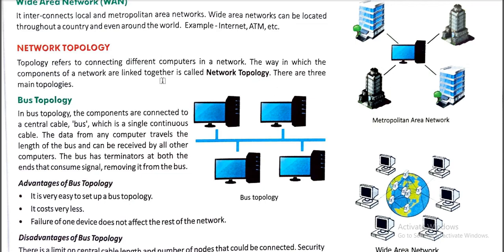The first is Bus Topology. In bus topology, the components are connected to a central cable called a bus, which is a single continuous cable. Data from one computer travels the length of the bus and can be received by all other computers. The bus has terminators at both ends to remove the consumed signal. In bus topology, one computer is the main computer and the other computers only receive data.